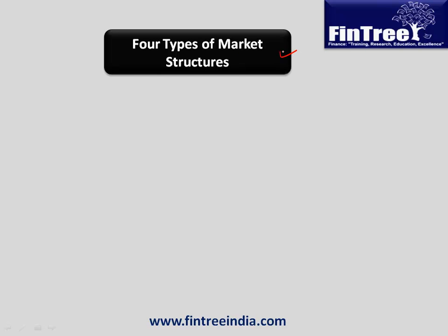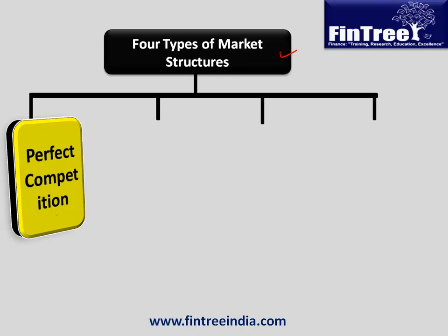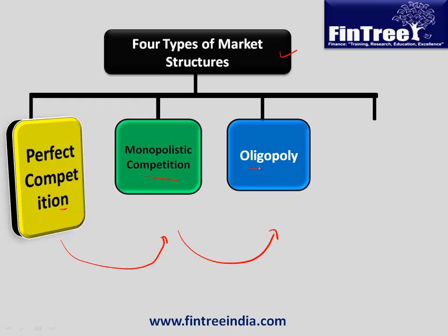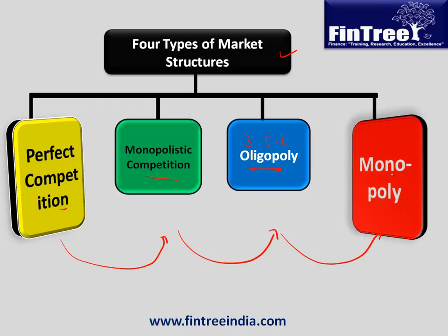There are four major types of market structures we would be studying. The first is perfect competition, which means there is a huge amount of competition between various players. If we reduce competition a bit, we get monopolistic competition. Reduce it further and we get oligopoly, with perhaps three, five or six sellers. Finally, reduce competition to one seller and that is called a monopoly market.